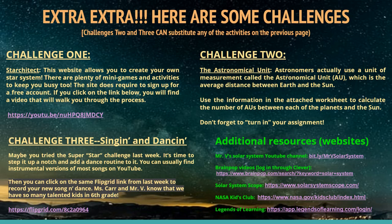Challenge 2: The Astronomical Unit. Astronomers use a unit of measurement called the Astronomical Unit, abbreviated AU, which is the average distance between Earth and the Sun. Use the information in the attached worksheet to calculate the number of AUs between each of the planets and the Sun. Don't forget to turn in your assignment.